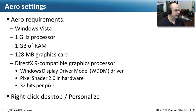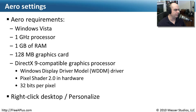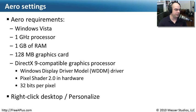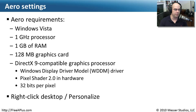You need at least a 1 GHz processor, 1 GB of memory in your system, and a graphics card that has 128 MB of RAM on it. So already we've got a relatively beefy system that can handle this additional graphics requirement. Also, the graphics processor has to be DirectX 9 compatible. It has to use a driver model called the Windows Display Driver Model — WDDM. In hardware, it has to have Pixel Shader 2.0, and you have to have a color depth of 32 bits per pixel.